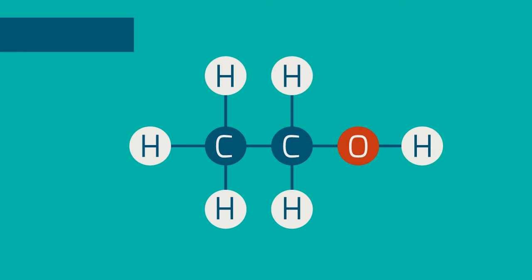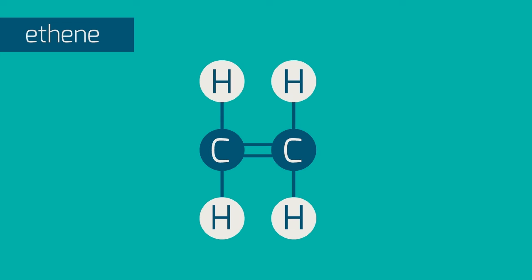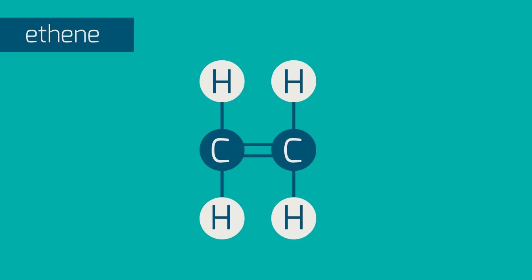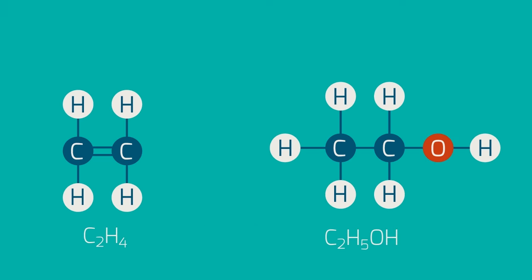Let's move on to our second route. This one also makes ethanol, this time from a hydrocarbon called ethene. You might have come across it in our videos on hydrocarbon cracking. Here's the ethene molecule and its molecular formula. Here's the ethanol molecule from before.